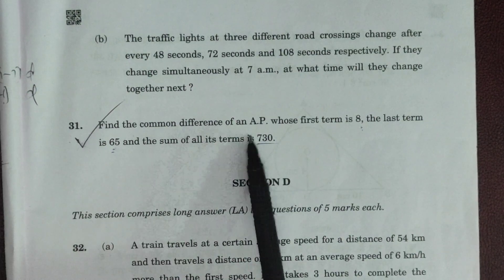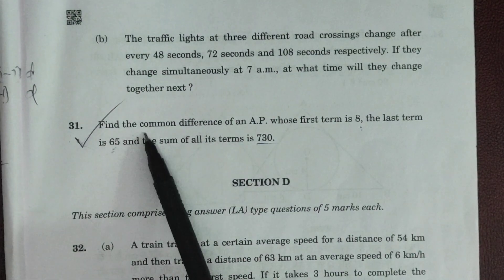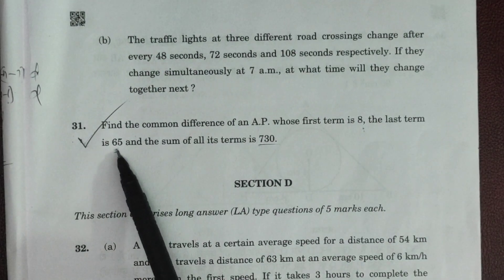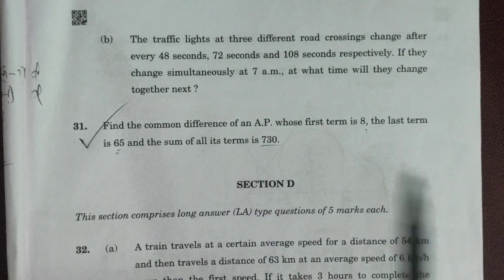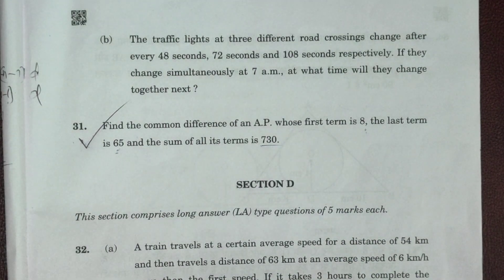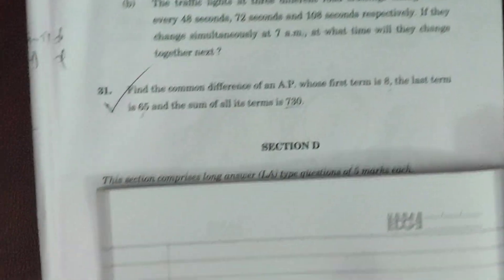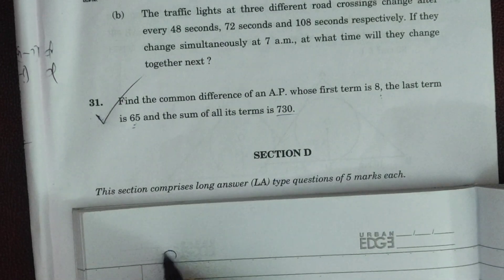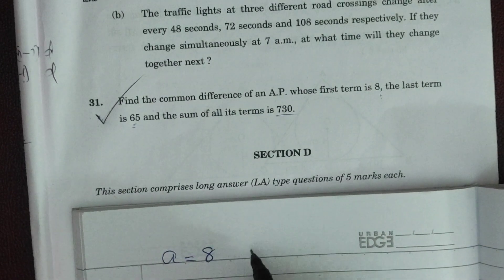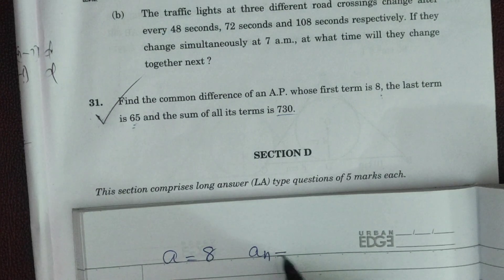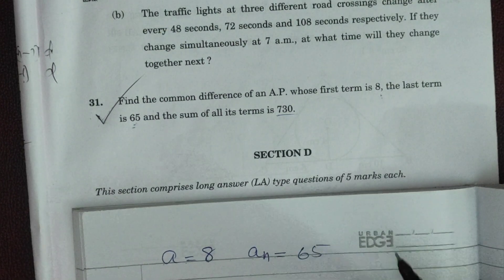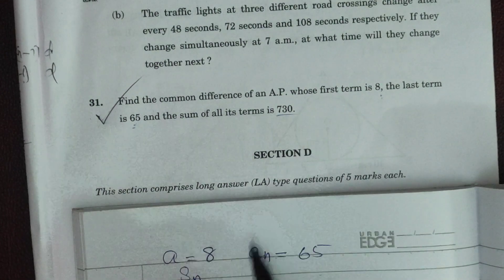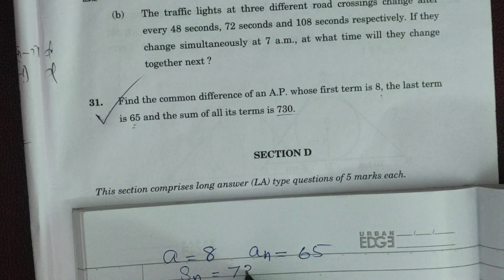Set 3 Section C, 3-mark question: find the common difference of an AP whose first term is 8, last term is 65, and the sum of all its terms is 730. Given: a = 8, an = 65, Sn = 730.